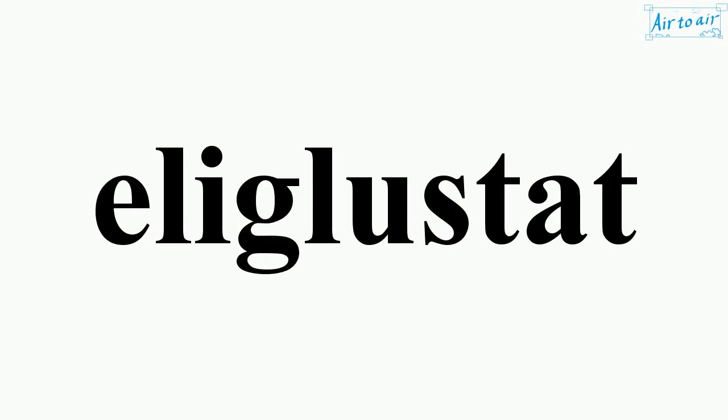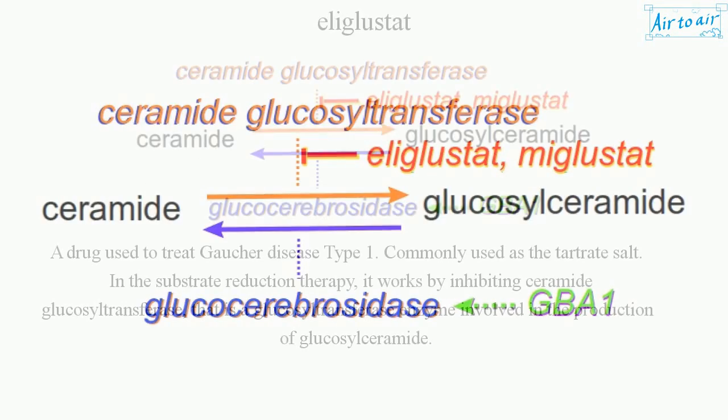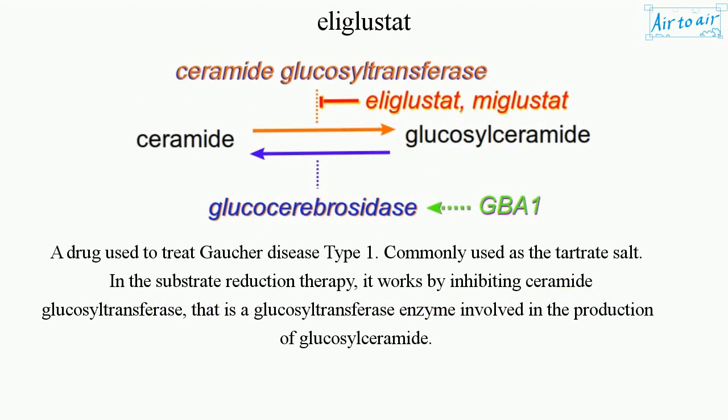Elaglystat is a drug used to treat Gaucher disease type 1, commonly used as the tartrate salt. In substrate reduction therapy, it works by inhibiting ceramide glucosyl transferase, a glucosyl transferase enzyme involved in the production of glucosyl ceramide.